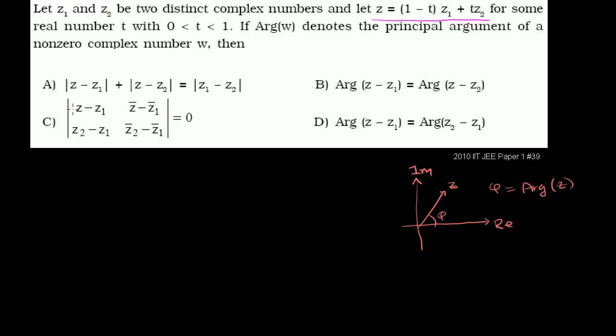Let's go through each of these choices and see if they're true. This is one of those problems where more than one choice might be correct. Let's first figure out what the magnitude of z minus z1 is.